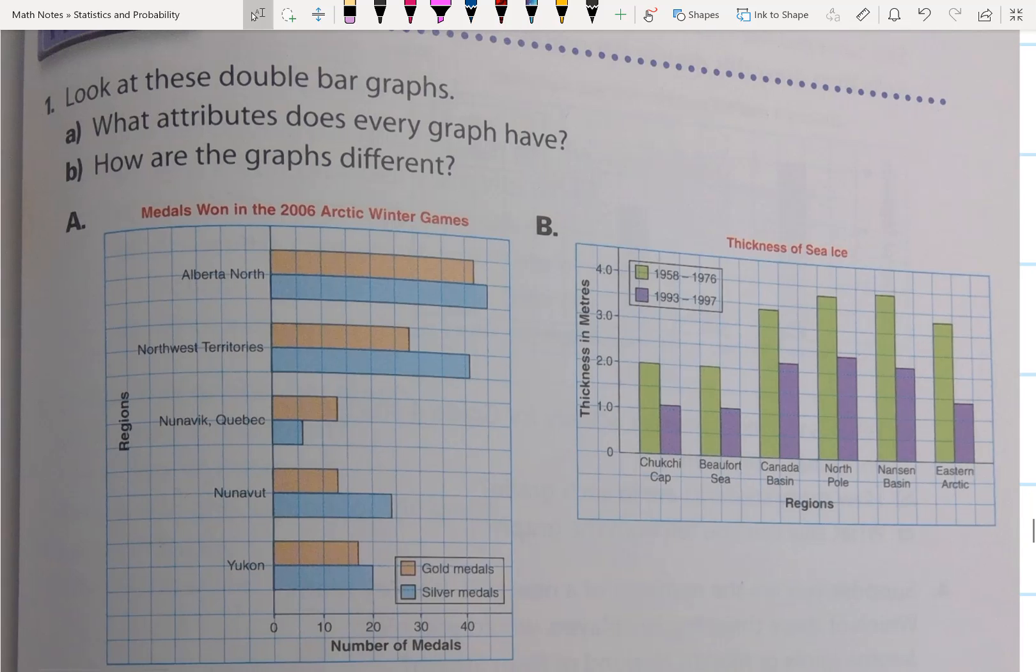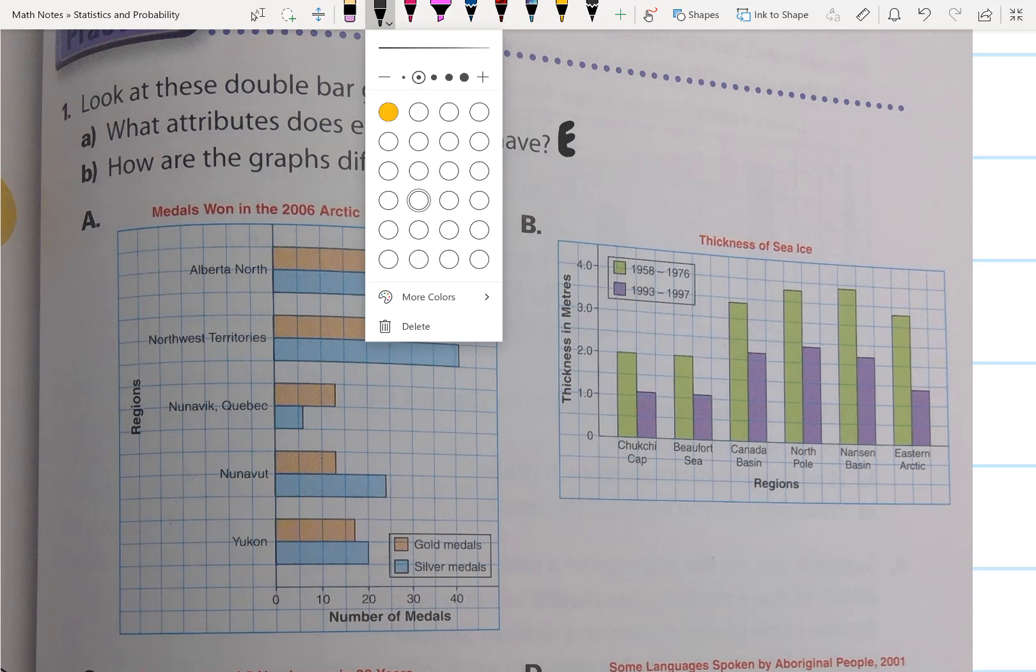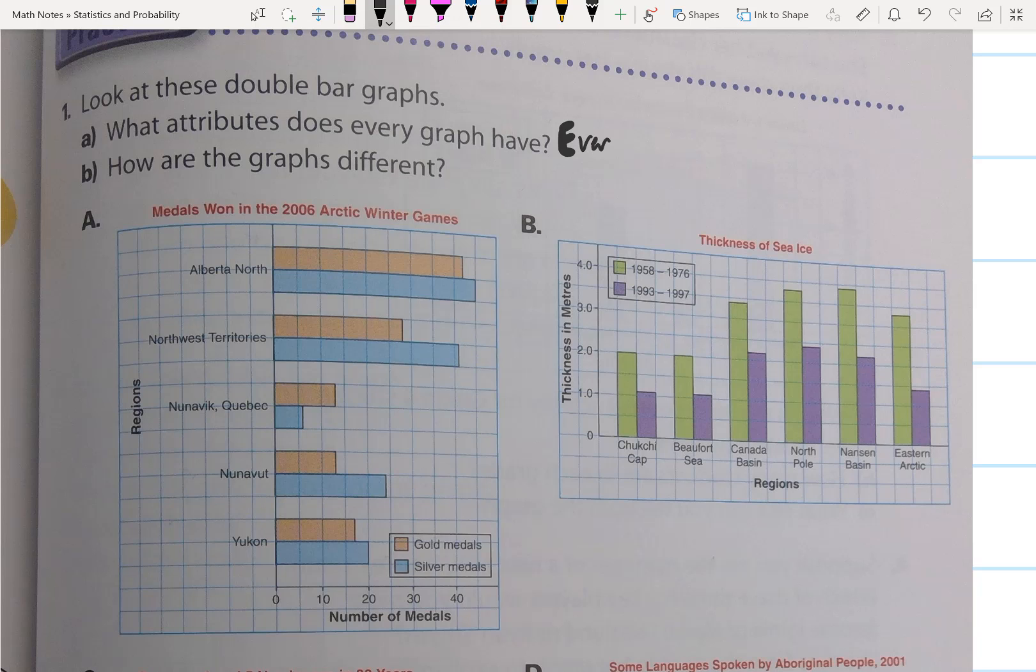Question 1 asks you to look at these double bar graphs. Question A asks what attributes does every graph have? The answer is that every graph has a title, a horizontal axis, a vertical axis, and a legend.